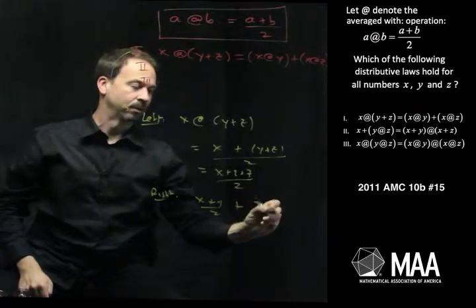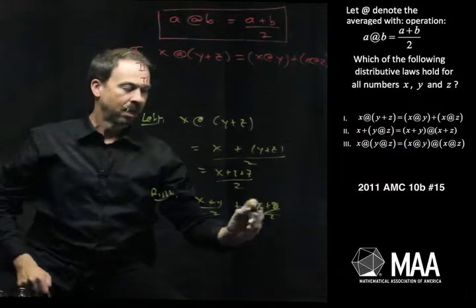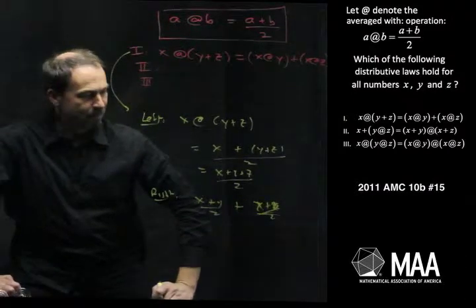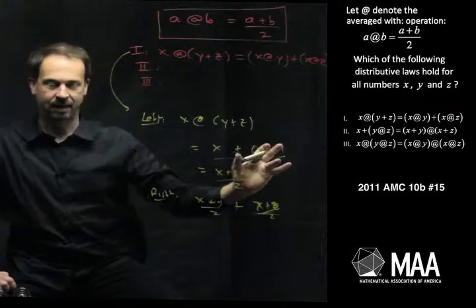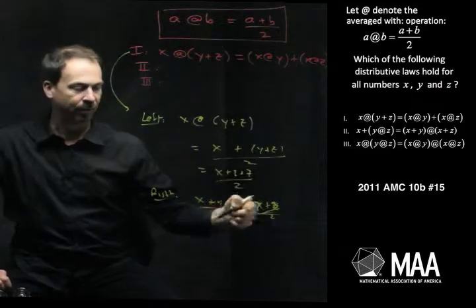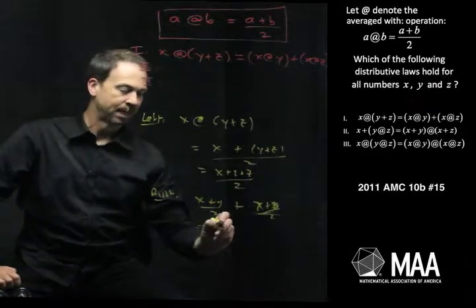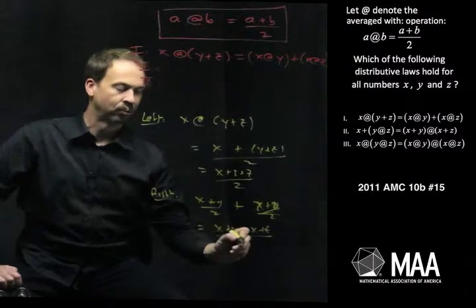Oops, x plus z over two. And it might be helpful in order to compare it to the left side, to put it as a single fraction over the denominator of two as well. So this is actually x plus y plus x plus z all over two.